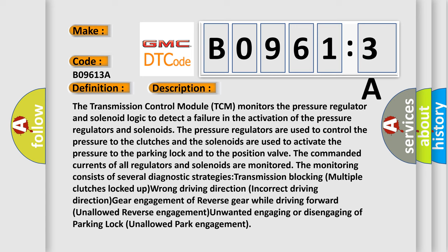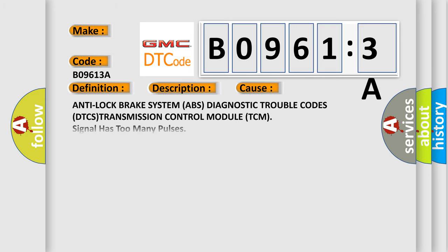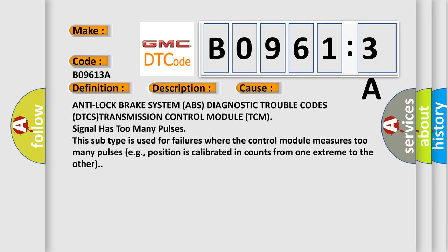This diagnostic error occurs most often in these cases: Anti-lock brake system (ABS) diagnostic trouble codes, DTC transmission control module (TCM) signal has too many pulses. This subtype is used for failures where the control module measures too many pulses, e.g., position is calibrated and counts from one extreme to the other.